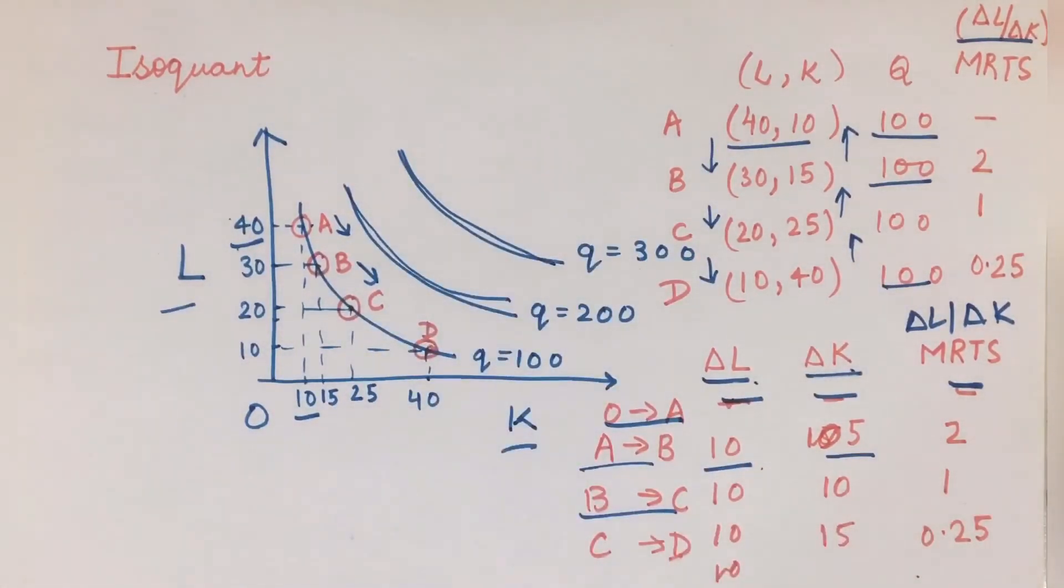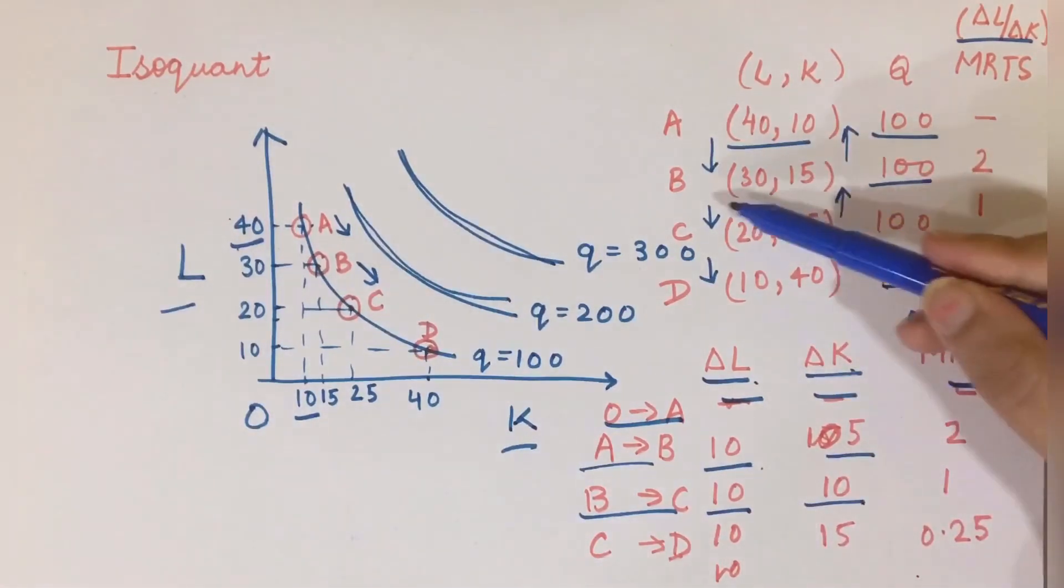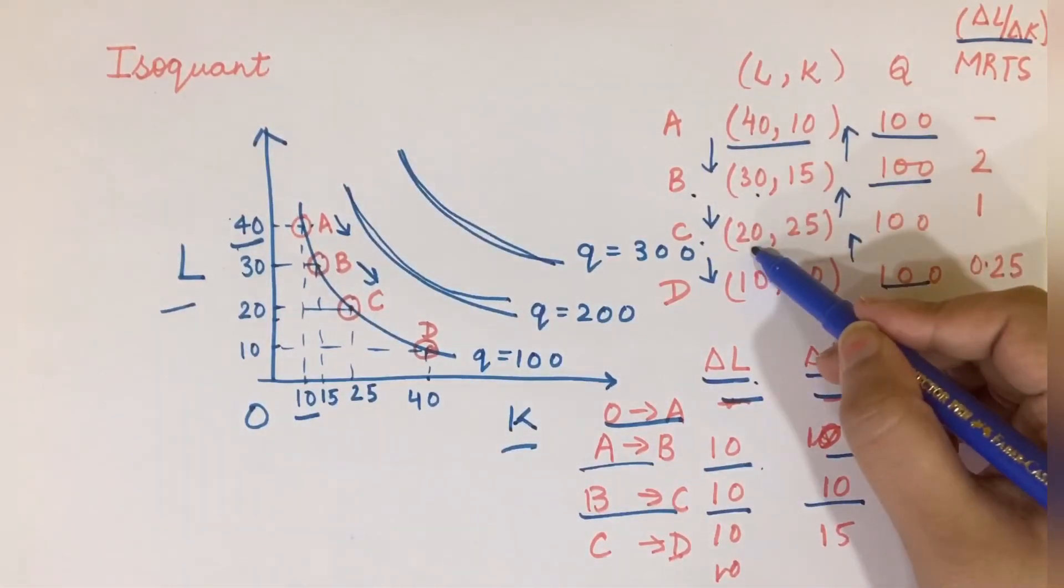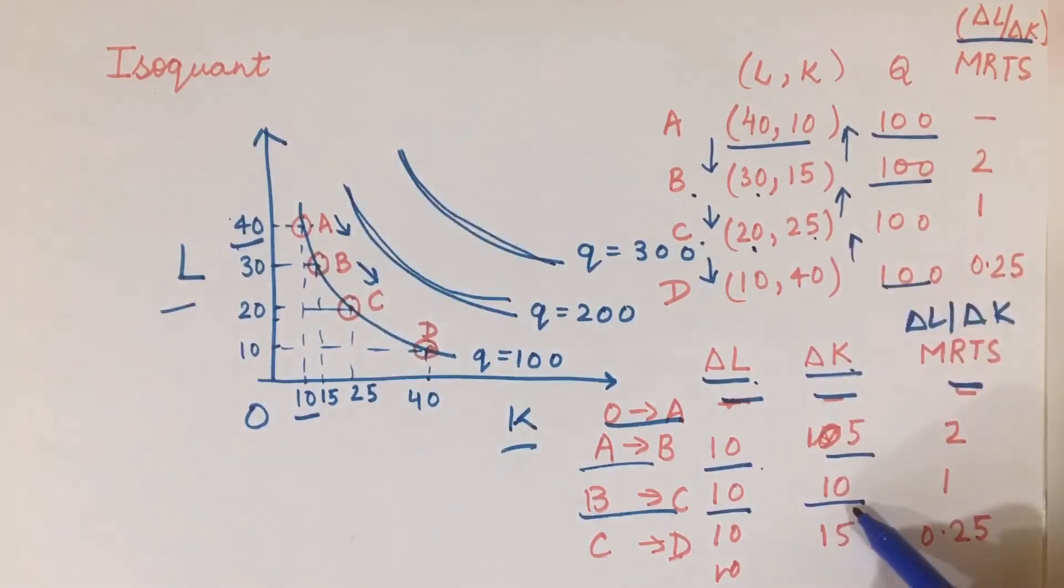Now if I move from B to C, I move further down. For this, my change in ΔL is 10, my change in ΔK is again 10. I am talking about the movement from B to C - you can see from 30 to 20 the change is 10, from 15 to 25 the change is again 10, and if I take the ratio it is 1.